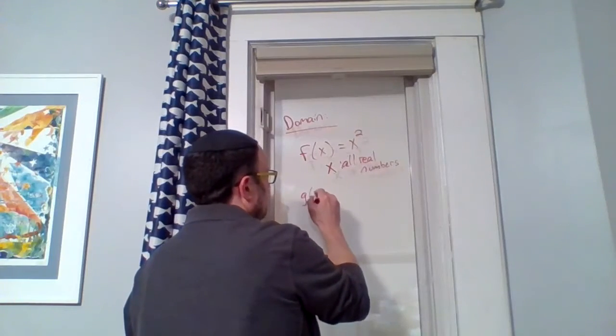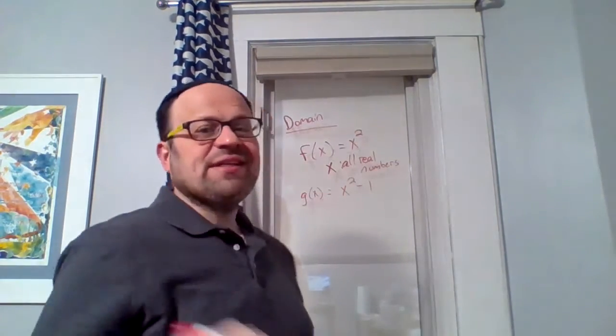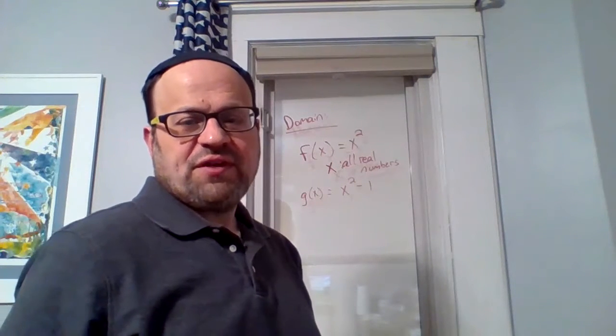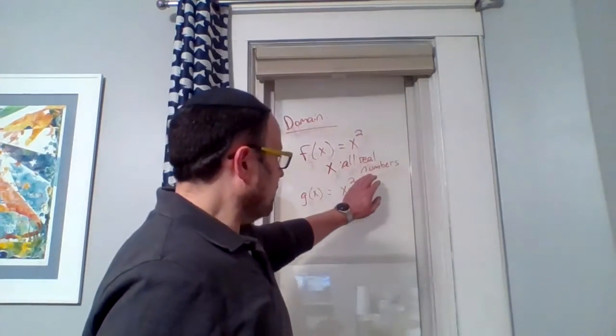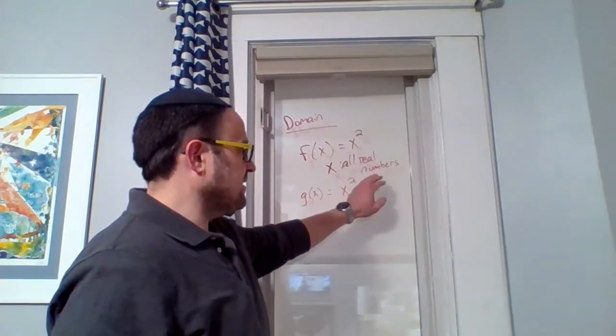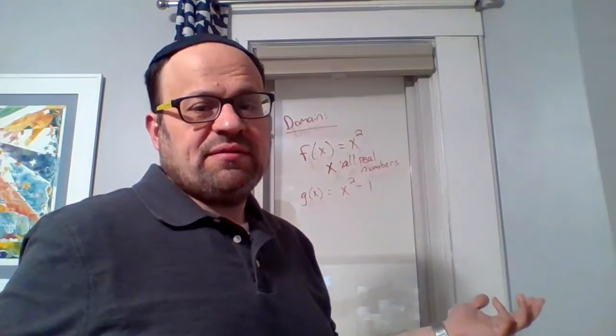Okay, so far so good. What if I have another function that's x squared minus one? Can we go through the same process and figure out what x can or cannot equal? Same thing. Ignore the minus one. x squared is the same. If I take away a number, it doesn't change anything.